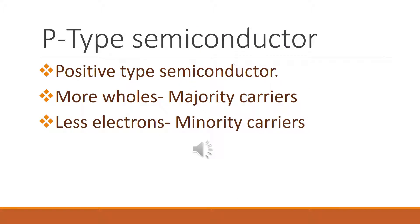P-type semiconductors means positive type semiconductors. P-type semiconductors have holes as majority carriers and electrons as minority carriers.